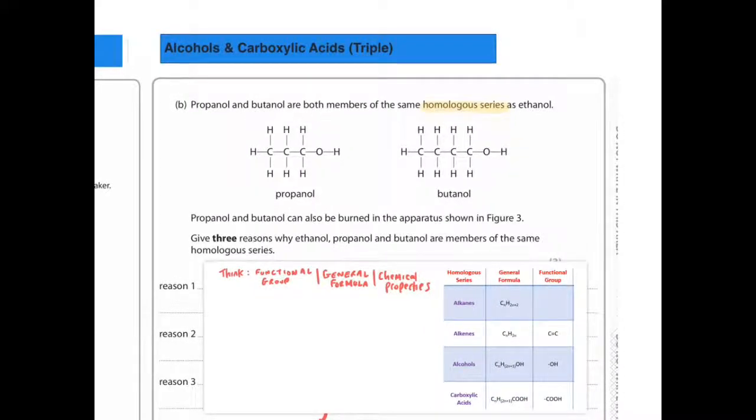Propanol and butanol are both members of the same homologous series as ethanol. Propanol and butanol can also be burned in the apparatus shown in Figure 3. So these are alcohols, they have an OH group.